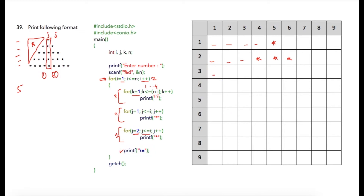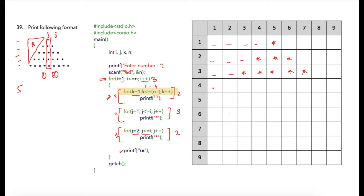In the next iteration where i is three, the spaces part executes twice, the first star part executes three times, and the second star part executes twice — giving two spaces, three stars, then two stars. Cursor moves to the next line. In the following iteration, the spaces loop executes once, the first star loop executes four times, and the second star loop executes three times — giving one space, four stars, then three stars.